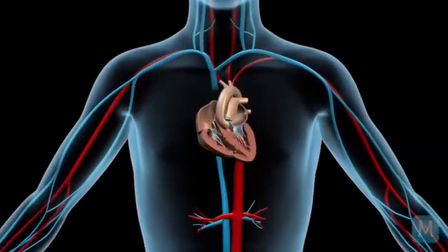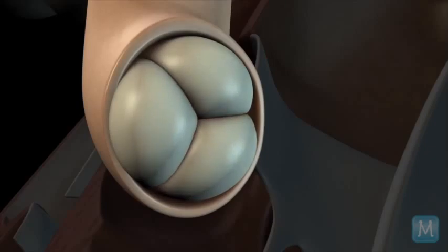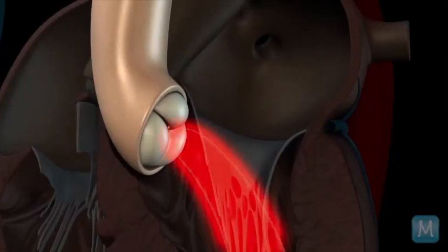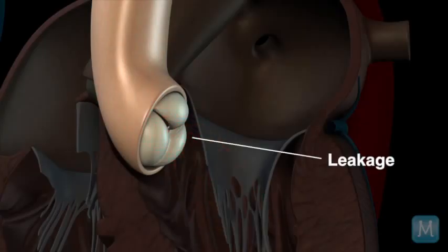The aortic valve opens to allow blood to exit the heart, and it closes so that blood doesn't come back into the heart. The most common disease of the aortic valve involves a gradual narrowing of the valve. However, there are also cases where the aorta — the main blood vessel after the heart — can enlarge and cause leakage of the aortic valve. So the valves normally act as doors, opening to allow blood to pass from one chamber to the next or into the aorta, and then closing so blood doesn't wash back where it came from. But sometimes these valves can be involved in disease processes of the heart.